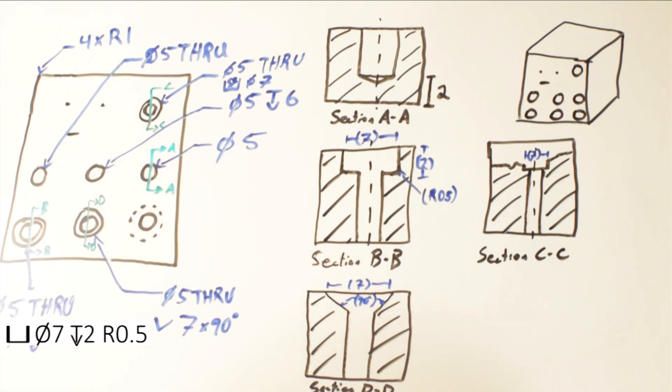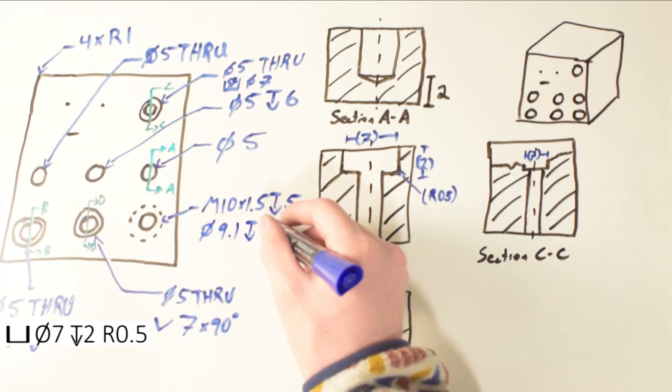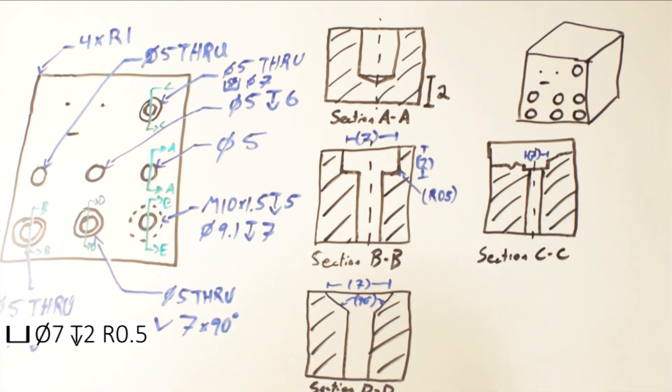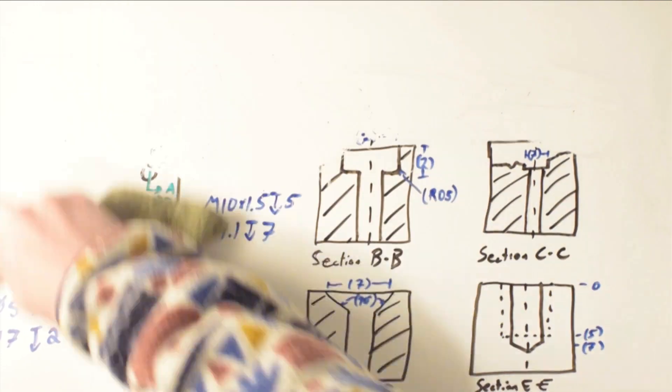Many features that you may think are holes at first are actually threads, and these are denoted by a dashed line around the outside of the diameter. In a sectioned view you will see something similar. The callout for a tapped hole is typically the size of the thread, the depth at which fully formed threads are required, and then the size and depth of the pilot hole.